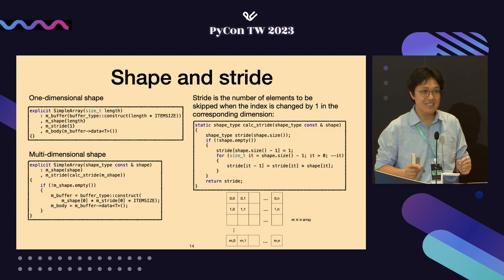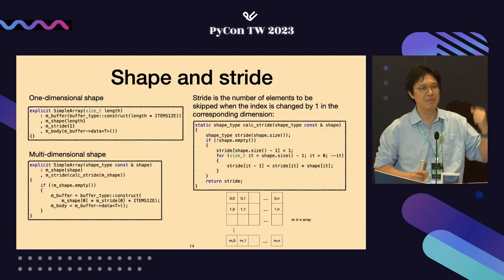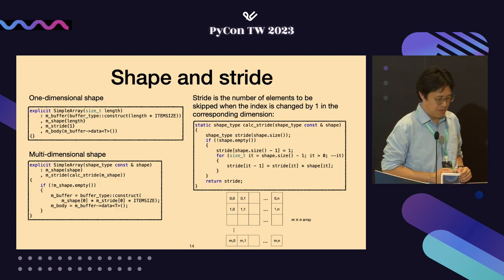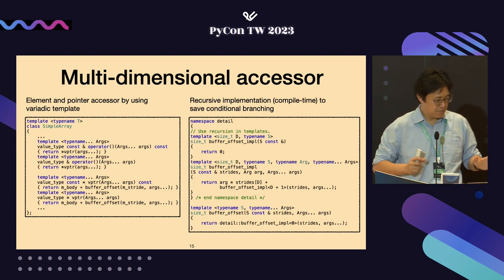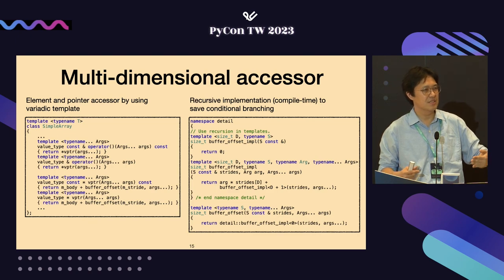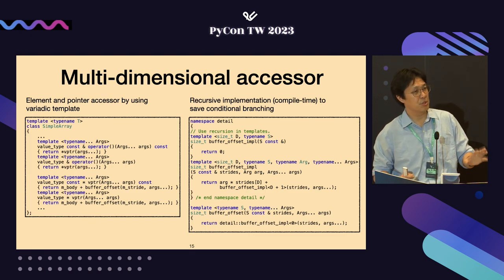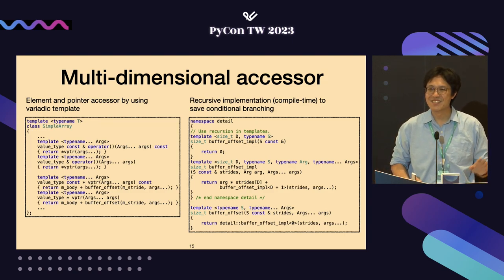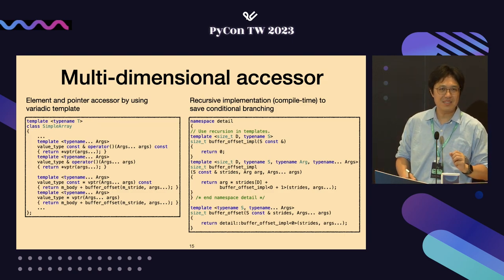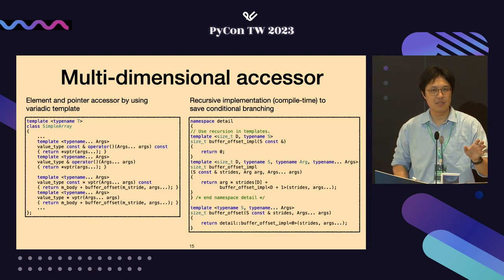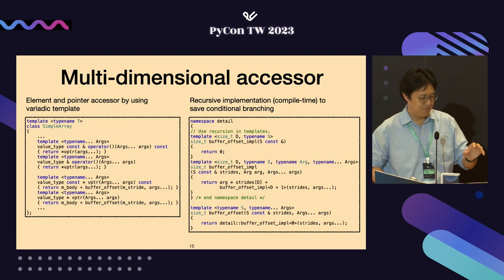For higher dimensions, the code uses variadic templates to do the calculation recursively. But if that recursion happened during runtime, it would be horrible for performance. So the recursion uses variadic templates, which happens during compile time. During runtime, it directly uses already-instantiated functions for the iteration.